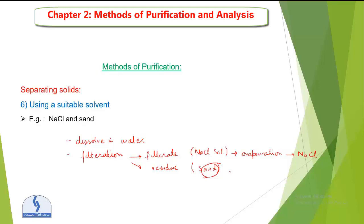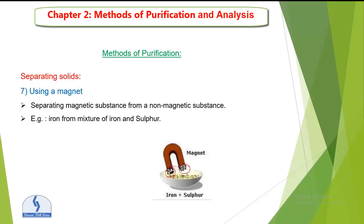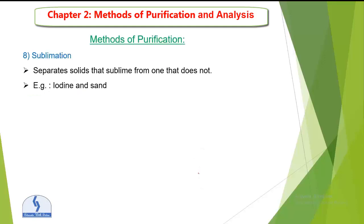Next is separating solids using a magnet — separating magnetic substances from non-magnetic substances. Example: iron from a mixture of iron and sulfur. Take a magnet and put it near the mixture — the iron will stick to the magnet, and the remaining material in the dish will be sulfur. Iron is the magnetic substance and sulfur is the non-magnetic substance.